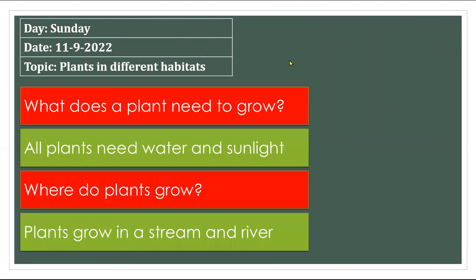After writing these answers in our notebooks: what does a plant need to grow? All plants need water and sunlight to grow. Where do plants grow? Plants grow in a stream and a river. Plants need water and sunlight and can grow in a stream and a river.